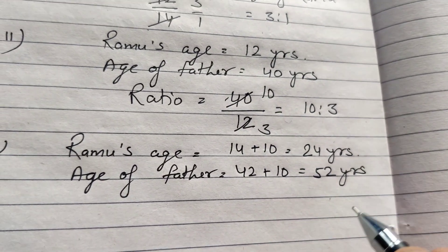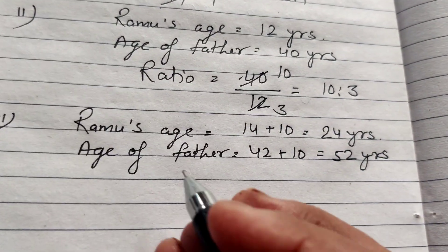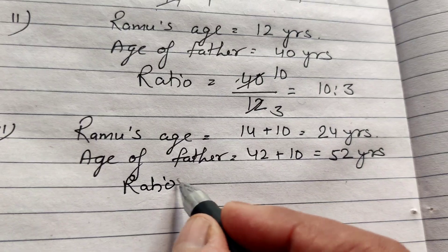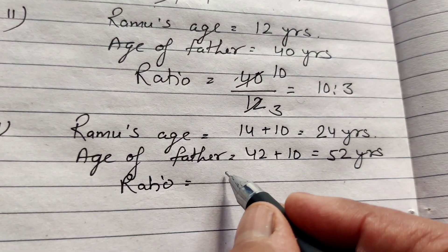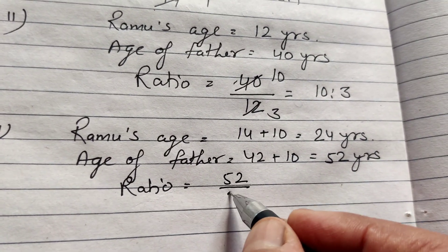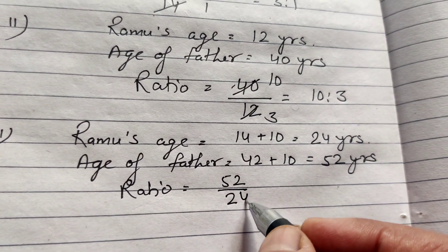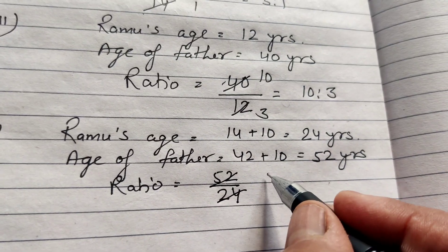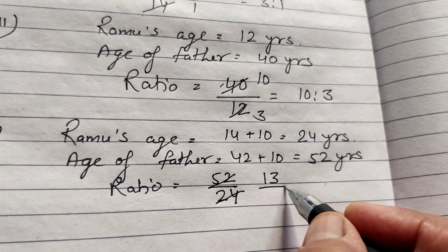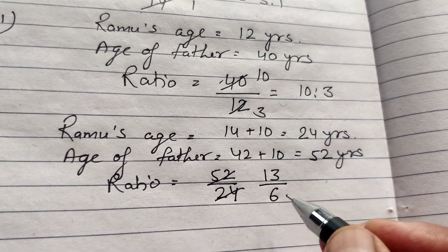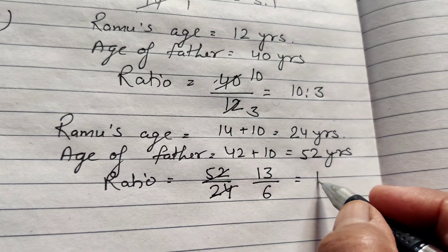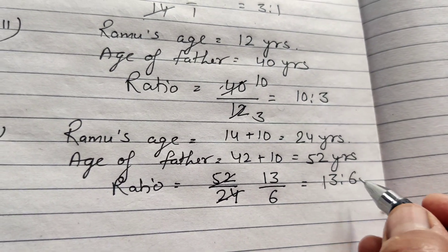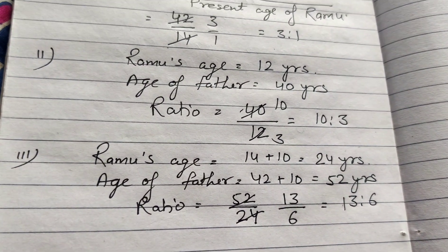The ratio of father to Ramu after 10 years is 52 by 24. Cancelling by 4, we get 13 by 6. So the ratio is 13 is to 6. That is the third answer.